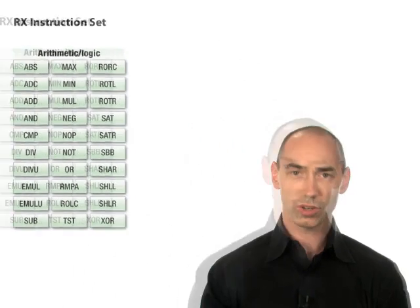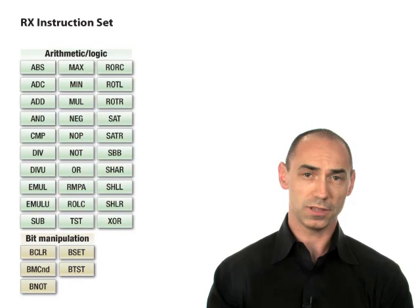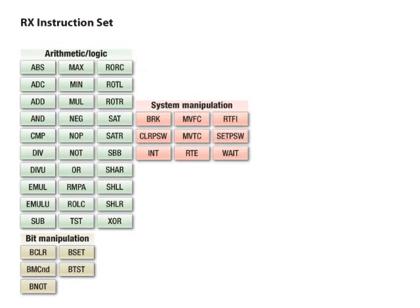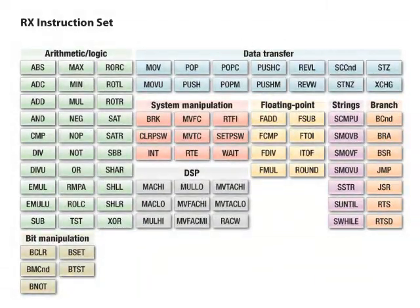The RX instruction set contains 8 types of instructions. There are 30 instructions for arithmetic and logic operations, 5 instructions for bit manipulations, and 9 instructions for system manipulations. In total, the RX instruction set includes 89 instructions, and over half of these are single clock instructions.